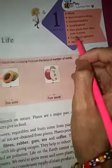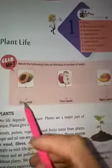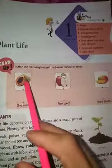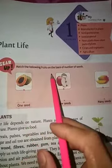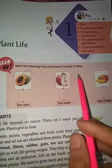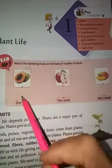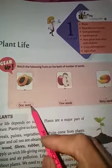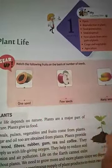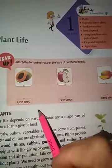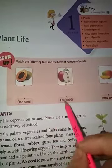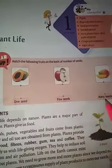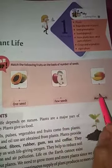Now you have some diagrams — match the following fruits on the basis of number of seeds. Tell which fruit has only one seed, which has few seeds, and which has many seeds.